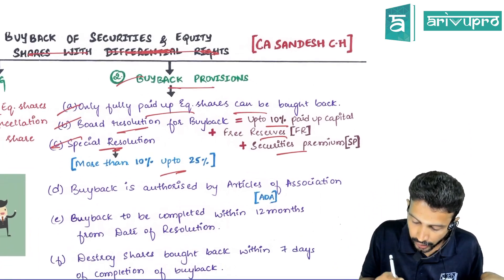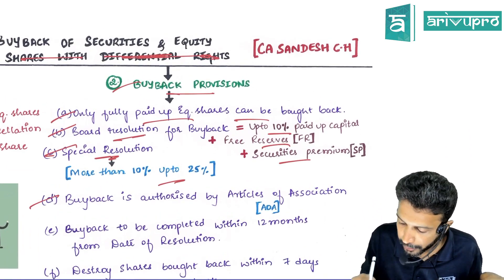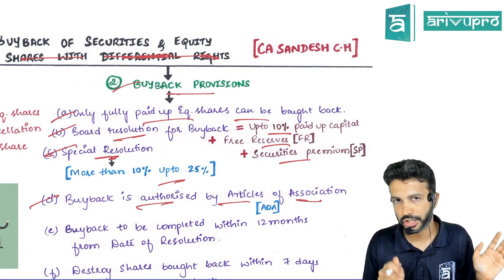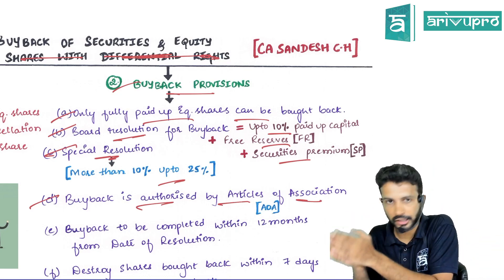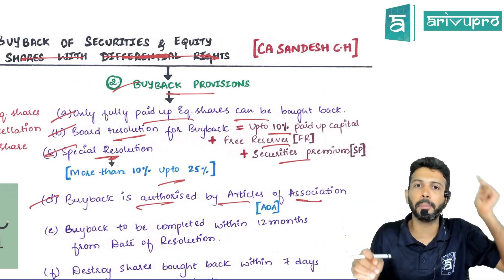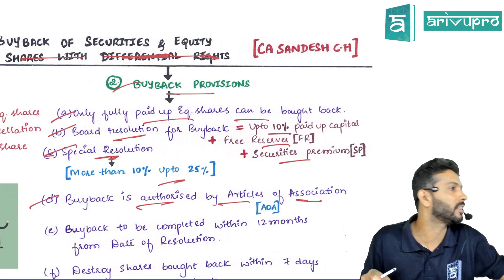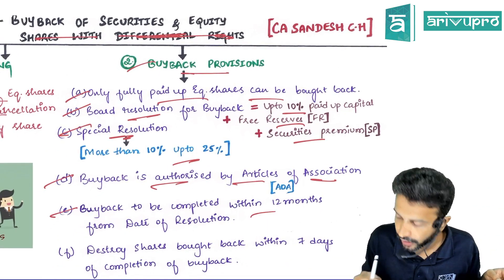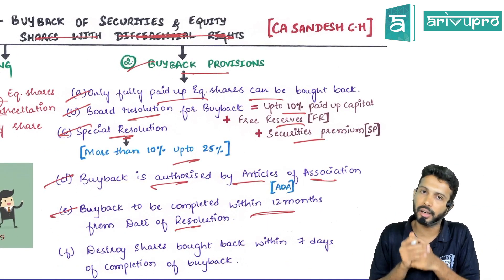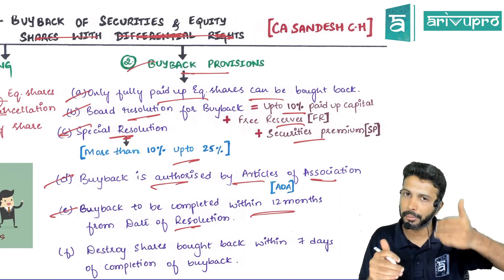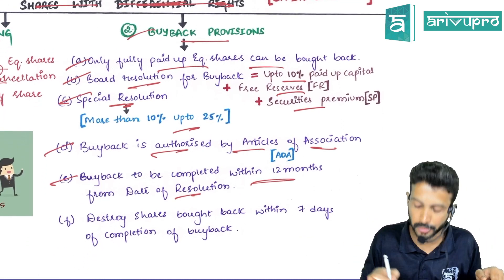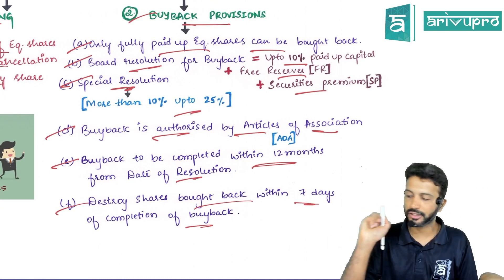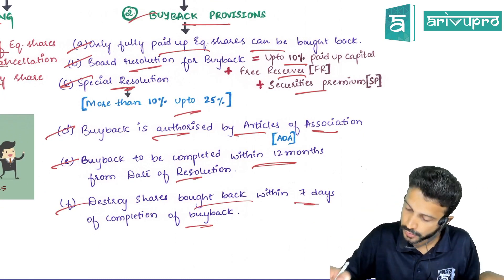The buyback provision should be authorized by the articles of association. If your articles don't contain this clause, amend your articles, bring in this clause, and then do the buyback. Buyback has to be completed within 12 months of the date of passing the resolution, and once you decide to buy back, the shares have to be physically destroyed within seven days.